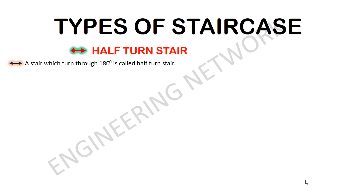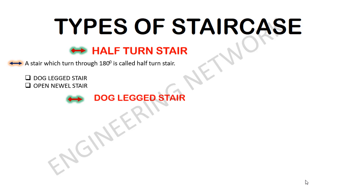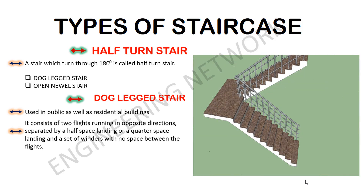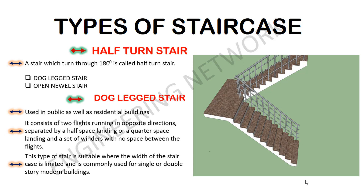The next type is the half turn stair. A stair which turns through 180 degrees is called a half turn stair, and it is further classified into two types: dog-legged stair and open Newell stair. The dog-legged stair is a very common and popular type used in public as well as residential buildings. It consists of two flights running in opposite directions, separated by a half space landing or a quarter space landing, with no space between the flights. This type is suitable where the width of the staircase is limited and is commonly used for single or double storey buildings.